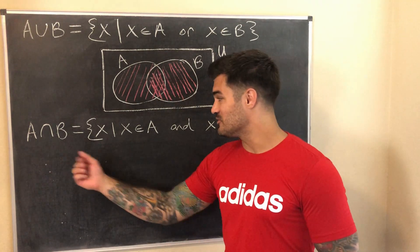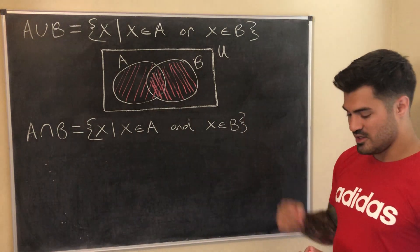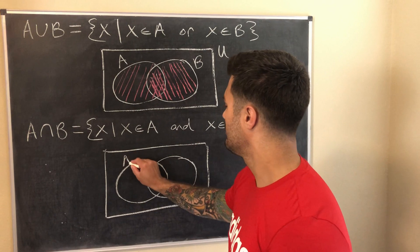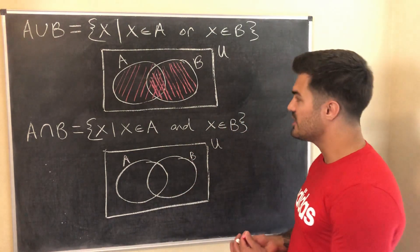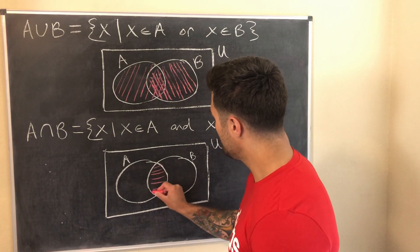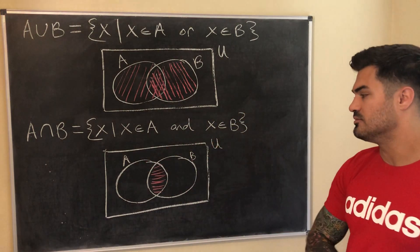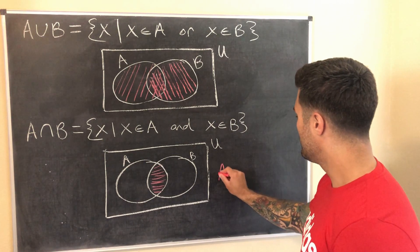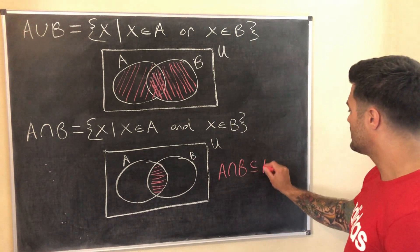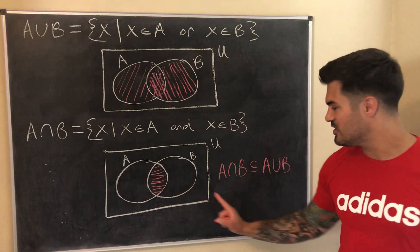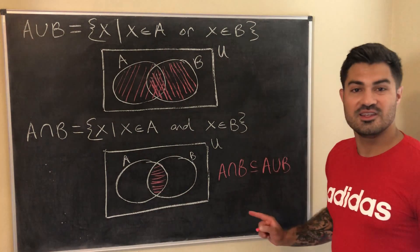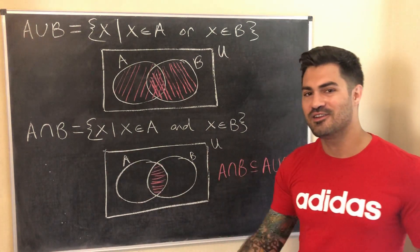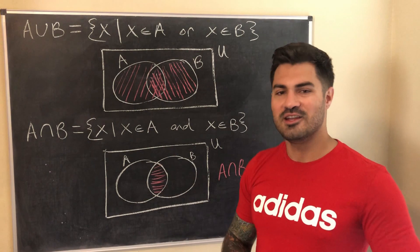The intersection of two sets is the set of all elements that are in A and in B. Drawing a Venn diagram with sets A and B inside the universal set, the intersection is just the overlapping region — the elements in both A and B. One useful observation is that the intersection is always a subset of the union: A intersect B is always a subset of A union B. When I think of union I think of 'or,' and when I think of intersection I think of 'and.'